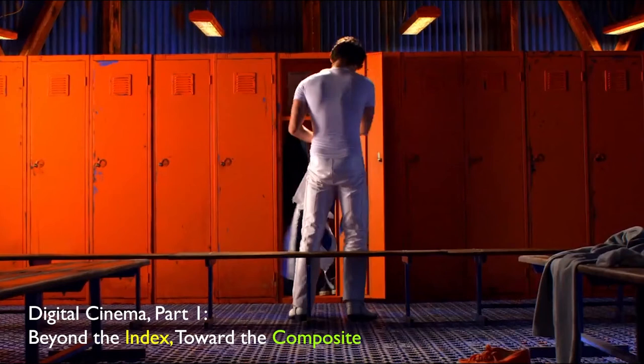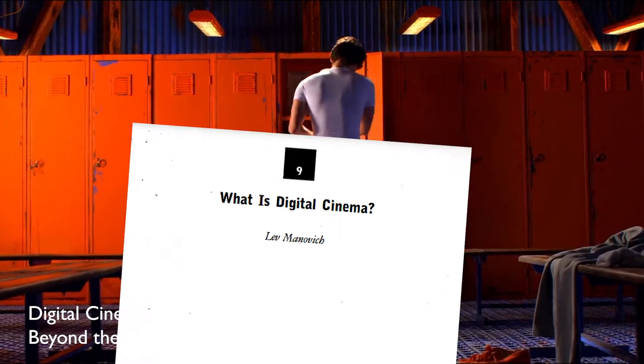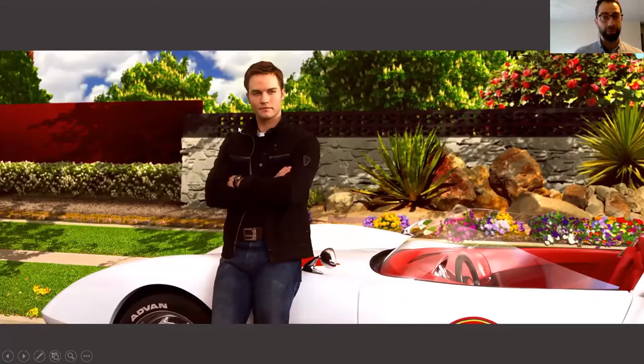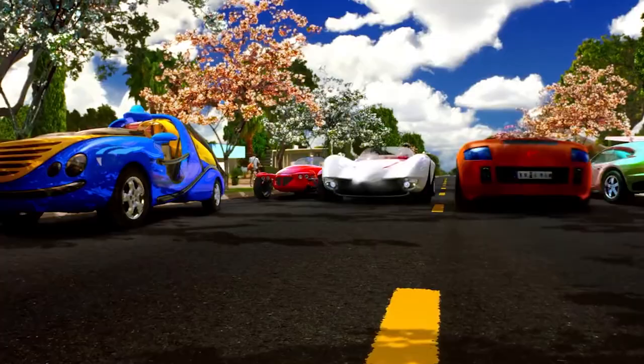Hi folks, this is the first video on digital cinema. We'll be talking about Lev Manovich and his ideas about moving away from the index and toward a composite. We'll start to talk about how Speed Racer is a film that seems to respond to this evolution in cinema. So the question is what do we make of an image like this? There's a strangeness inherent to this image and especially this scene from Speed Racer, a strange scene in an already strange film. What do we make of its visual design?